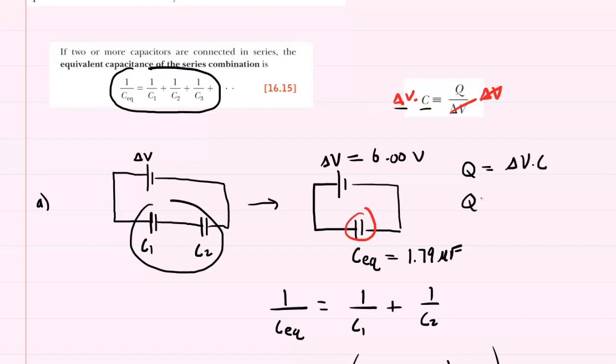So we'll go ahead and plug in our known values. We have 6 volts times the 1.79 microfarads. When we process this calculation, we're going to get about 10.7 for our charge. Notice the unit here will be in microcoulombs as opposed to coulombs because we used micro for farads. So our unit will be also in micro, 10.7 microcoulombs.